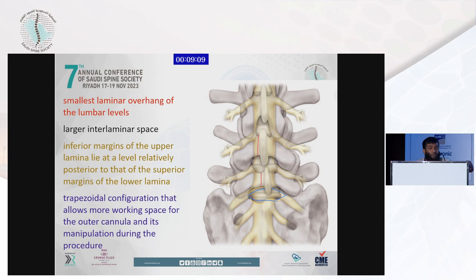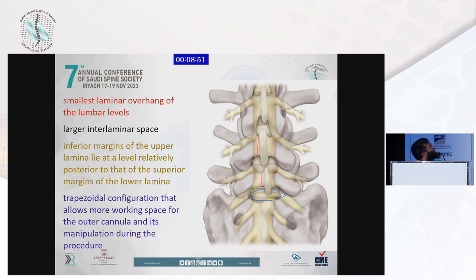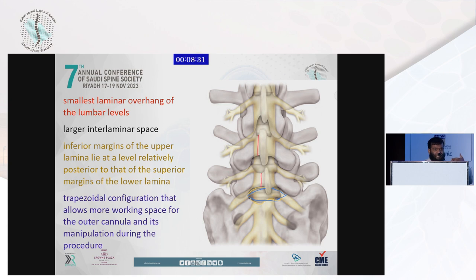Why focus on L5S1? My mentor always taught me to do L5S1 until you master it. There is a lot of anatomical variation in this area. As seen in the red line, the smallest laminar overhang is at the lumbar level of L5 compared to other levels. The black shows a larger interlaminar space. In yellow, the inferior margin of the upper lamina lies at a level relatively posterior to the superior margin of the lower lamina, which makes a different plane — wide and larger.